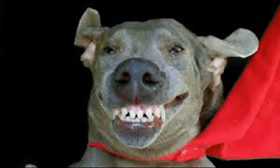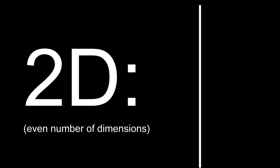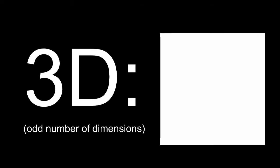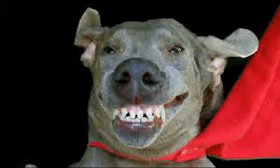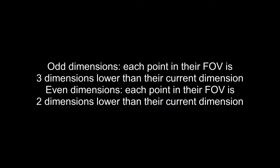Assuming that people could see and exist in other spatial dimensions, all people in an even number of dimensions will see in a line, and all in an odd dimension will see in an overall shape of a square. So 2-dimensional people would see in a 1-dimensional line, and 4-dimensional people would see in a 3-dimensional line. Each point in the field of view for people in an odd number of dimensions will be 3 dimensions lower than their dimension, and 2 dimensions lower for people in an even number of dimensions.